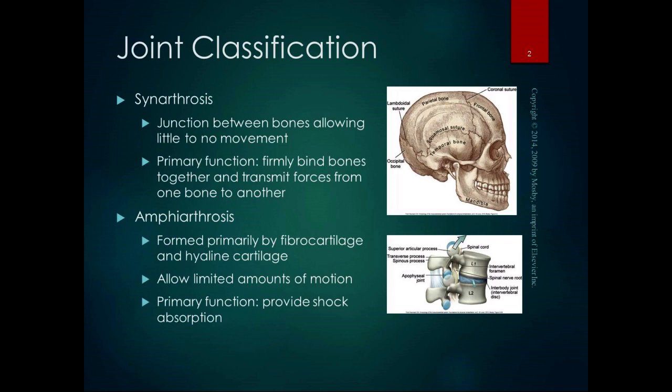The amphiarthrosis joints are usually formed primarily by fibrocartilage and hyaline cartilage. They allow limited amounts of motion, but their primary function is to provide shock absorption. Examples of amphiarthrosis are the vertebral joints, where we have the fibrocartilaginous disc in between the vertebrae, and the pubic symphysis. These are all shock absorption areas where we want to absorb shock but allow a limited amount of motion.